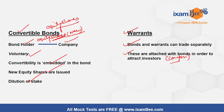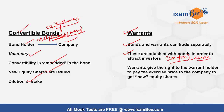Warrants give the right to the warrant holder to pay a predetermined exercise price to the company and get new equity shares in return. When this exercise price is paid to the company and new equity shares are given to the warrant holder, it starts to look like an option — but it differs from an option.